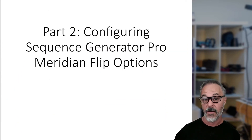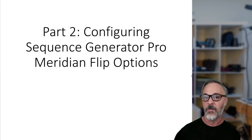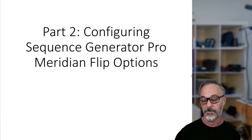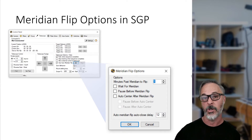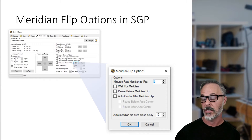I am using Sequence Generator Pro version 4.0, which is a beta version, but it's pretty solid — the 64-bit version. These meridian flip settings haven't changed much across recent versions, so it's probably going to look the same for you, maybe a little different. The flip options are inside the control panel under the telescope tab. There's an option that says 'Use Meridian Flip,' and within there, under the Set button, is a dialog box with all the meridian flip options.